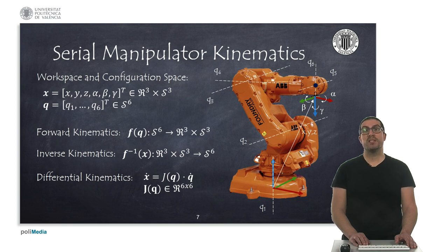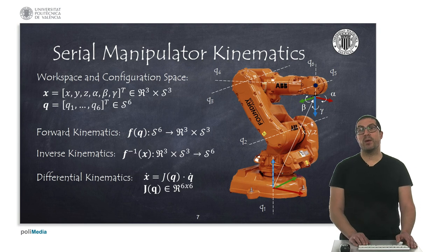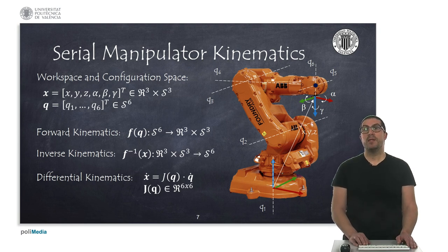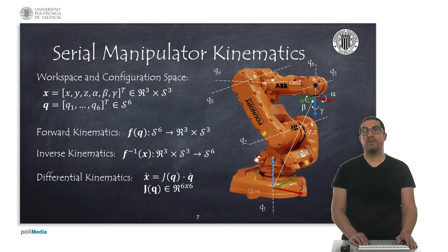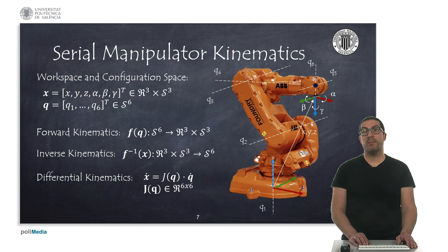However, due to the joint limits, some of these solutions might not be physically achievable and that is why we can discard some of them. The Jacobian matrix of the robot is obtained from the partial derivatives of the forward kinematics model with respect to Q, the robot joints. This is a six-by-six matrix that allows obtaining the end-effector speeds from current configuration Q and joint speeds Q-dot. The matrix can be singular, which means that at singular configurations the rank of this matrix will be less than six, and therefore there will be a direction that is blocked.